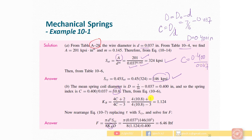Substituting C = 10.8, we get K_B = 1.124. With wire diameter d = 0.037, torsional yield strength S_sy = 146 KPSI, K_B = 1.124, and mean coil diameter D = 0.4 inches, the static load comes out to 6.4 pounds-force.